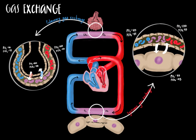Now we'll discuss systemic gas exchange, which occurs at the interface of the systemic capillaries and systemic tissues. Red blood cells arriving at the systemic tissues unload their oxygen. Looking at the partial pressures, the partial pressure of oxygen is higher in the systemic capillaries — 100 mmHg — than in the surrounding tissues at 40 mmHg. Therefore, oxygen will diffuse into the tissues following its partial pressure gradient.